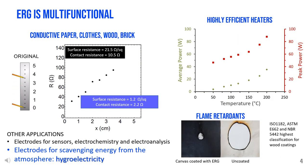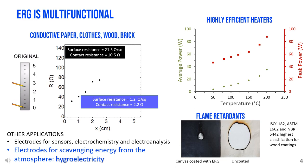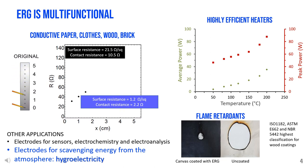ERG coatings are multifunctional. They are electrically conductive and suitable for making flexible circuitry on various surfaces. They have already been used to make electrodes for electrochemistry, electroanalysis and environmental control. ERG electrodes are inexpensive and resistant to corrosion, which makes them well-suited for hydroelectricity. Completely different applications are highly efficient heaters and flame-resistant coatings for wood.